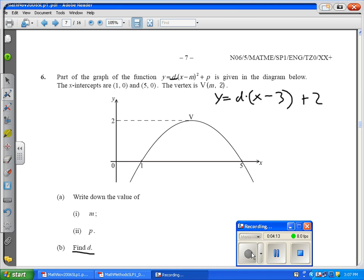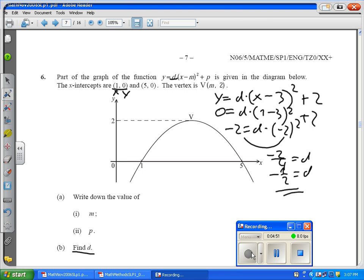Now, I can substitute one of the points, I'll choose (1, 0), and I'll just substitute it here. This is my X value, this is my Y value, so 0 = D(1 - 3)² + 2. Now, I take the 2 to the other side, which gives me -2 = D(-2)², which gives me -2/4 = D, which gives me -1/2 = D, and that is my final answer for part B.